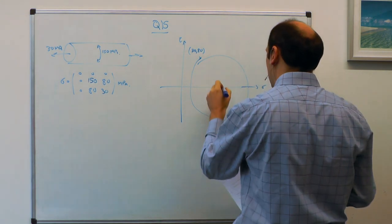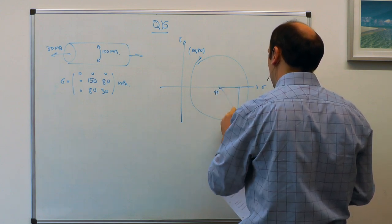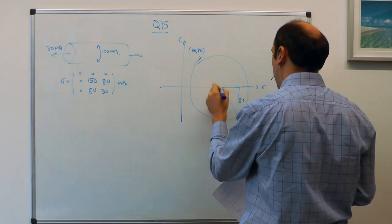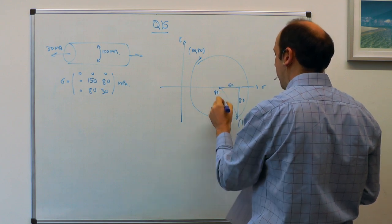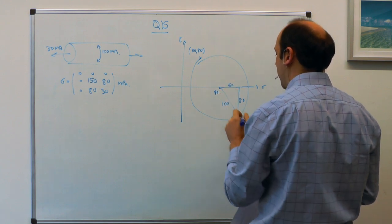And if you want to know the radius of Mohr's circle, then we've got 80. This is now 60, so it's a 345 triangle, and that's 100 megapascals.